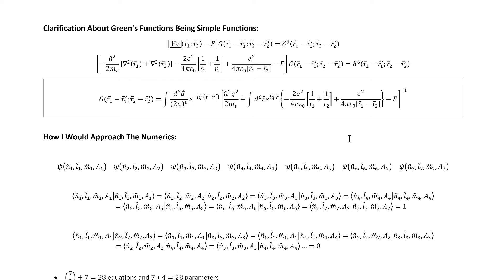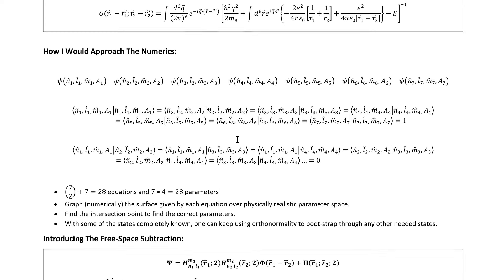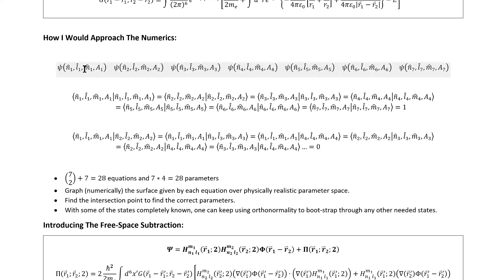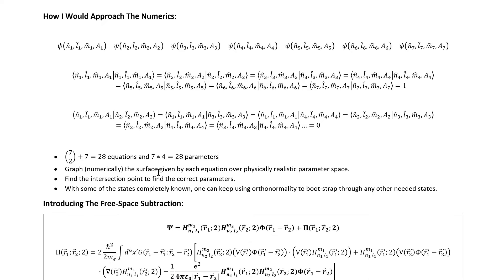First, I said that the Green's functions can be written in terms of simple functions. What I was really thinking of was integrals of simple functions. For example, we have this value for the helium case. Now as far as performing the numerics, here's how I would get started again using helium as an example. With helium, we've got four parameters per state that we need to determine. If we take seven states, we've got 28 parameters. But then we also have seven normalization constraints and then seven choose two orthogonality constraints for a total of 28 equations. So we've got the same number of parameters and equations. That's a nice place to start. If we then graph numerically the surface given by each equation over physically realistic parameter space, we can then find the intersection point to get the parameter values. With seven states known completely, we can then bootstrap our way to any other state just by taking inner products between it and the known states. And if you were going to do higher atoms, it would work the same. All the numbers would just be larger.